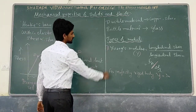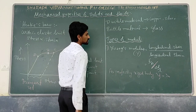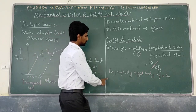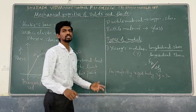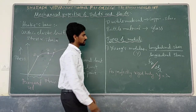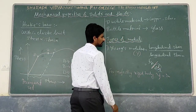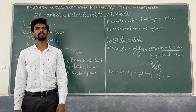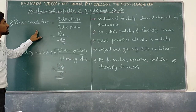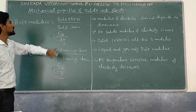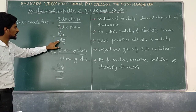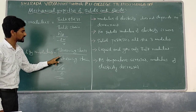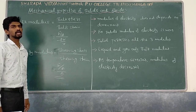Next: types of modulus. The first is Young's modulus — it is longitudinal stress by longitudinal strain. For a perfectly rigid body, there is no change in shape or size, so delta L is zero, meaning Young's modulus is infinity for a perfectly rigid body. Next is bulk modulus, which is bulk stress by bulk strain, given by pressure divided by delta V by V. Next is rigidity modulus, which is shearing stress by shearing strain — F by A divided by theta.